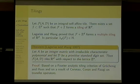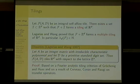A multiple tiling means that almost every point of R^D is covered exactly P times, where P is some fixed integer. What is more difficult is to prove that this multiple tiling is actually a tiling. This is not always true, but it is true for a big class. There is a nice theorem of Lagarias and Wang from 1997 that says if A is an integer matrix with an irreducible characteristic polynomial, and if D is a primitive standard digit set, then the tile F tiles R^D with respect to the lattice Z^D. The result is actually a bit more general; for reducible characteristic polynomials, they are able to give some characterizations as well.